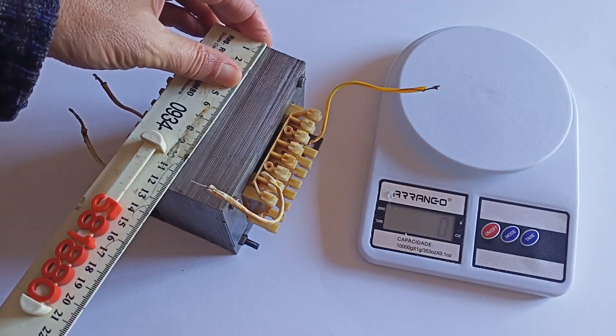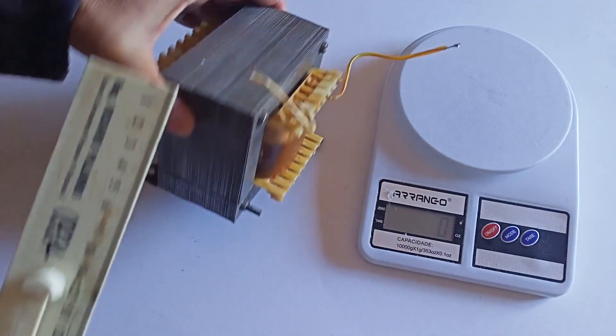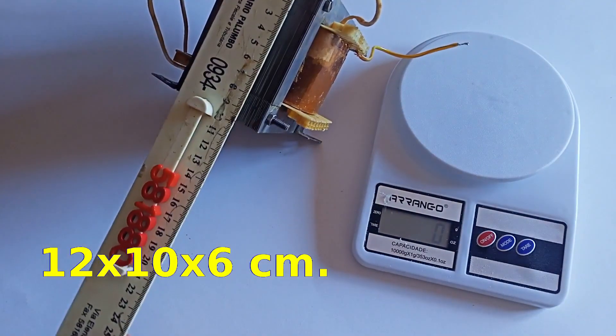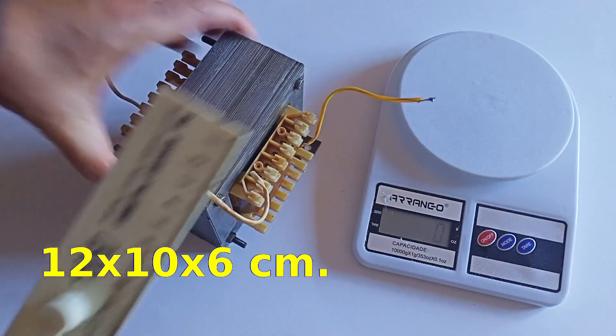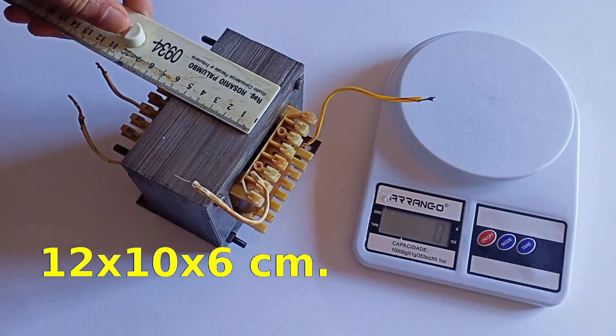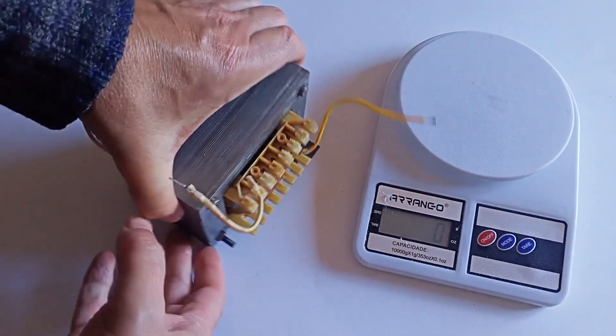Next we measure its physical dimensions with a ruler. It is a truly powerful device, as confirmed by its dimensions: 12 centimeters by 10 centimeters by 6 centimeters. It is indeed very heavy.